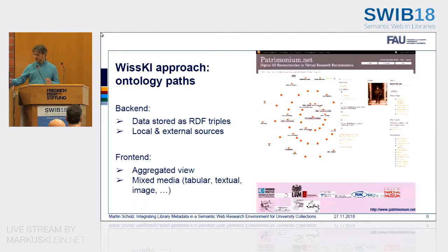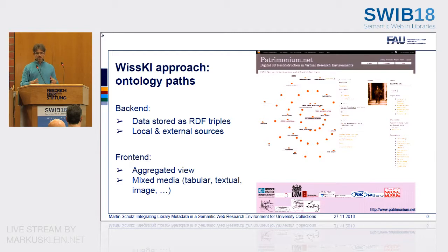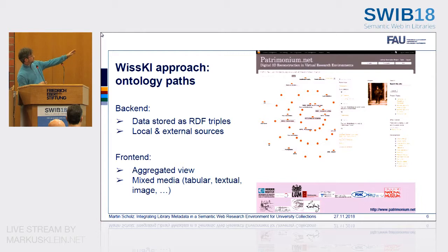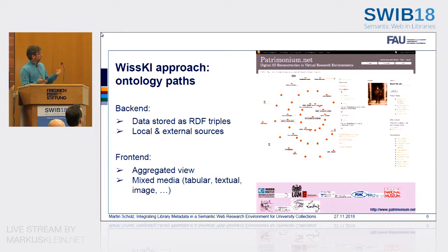Let's have a closer look at how the back end and the front end work together. The data is stored as RDF triples in a triple store. You can also combine local triple data with external triple data, for example from name authorities. On the front end you have this aggregated view, as you see in the screenshot. On the right-hand side you have tabular data and an image and so on — you may also have text, videos, or 3D objects. But all the information is actually stored as a triple graph, as you see on the left-hand side.